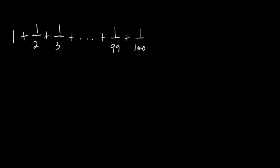So you can understand what the rule is: this is your first term, this is your second, third, fourth, fifth. And this is your 99th term. If you'll notice, this is your 99th term and this is your 100th term. The problem is, we're going to write this using sigma notation.